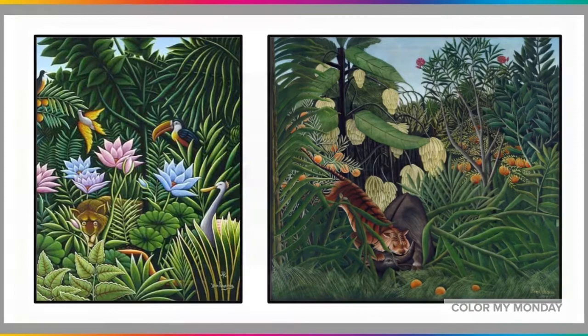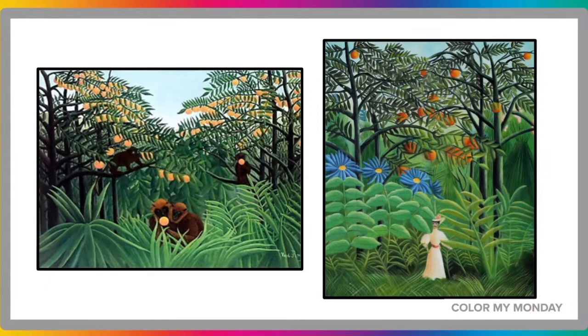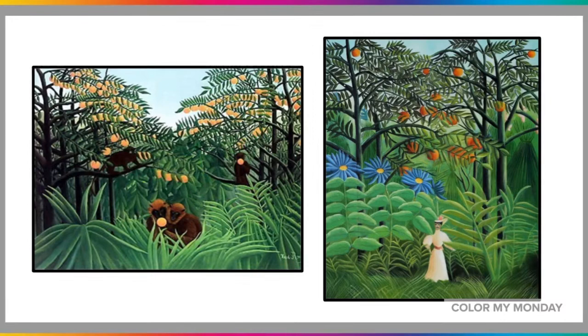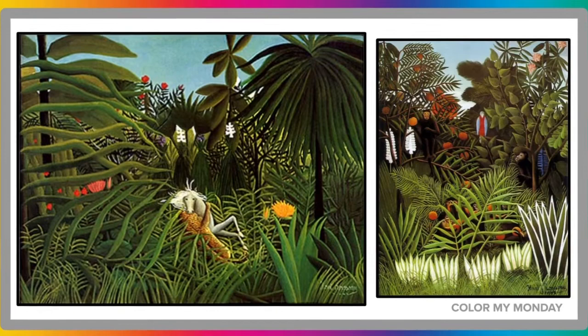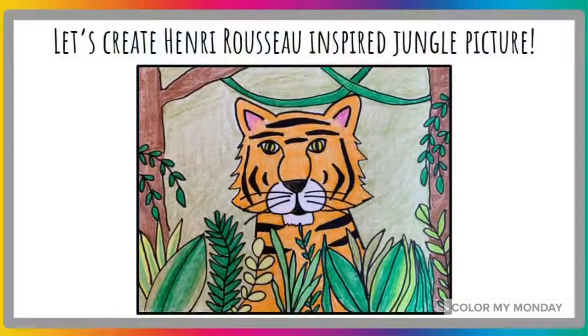At the age of 49, Rousseau retired from his job and dedicated his life to his art. That year, he met a friend who gave him the nickname the Customs Officer, and also introduced him to Pablo Picasso and other important artists of the time, all of whom admired Henry Rousseau's art. His paintings continue to influence art and are held in museum collections all around the world.